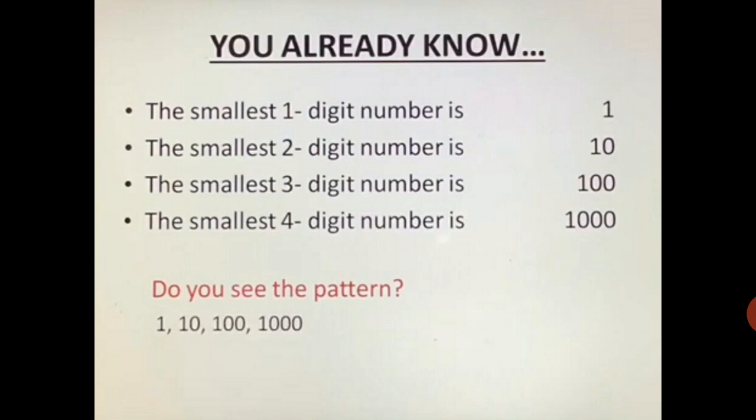Now, talking about the smallest numbers. The smallest one digit number is 1. The smallest two digit number is 10. The smallest three digit number is 100. The smallest four digit number is 1000. Do you see any pattern here? Yes, the pattern is: first we have only 1, then 1 with a 0, then 1 with two 0s, then 1 with three 0s. This pattern will move like this.